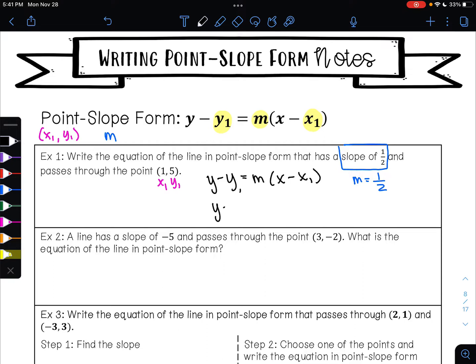So I'm going to have y minus, y₁ is 5, equals m is 1/2 times x minus x₁ is 1. This is our answer. There's nothing else that we have to do.